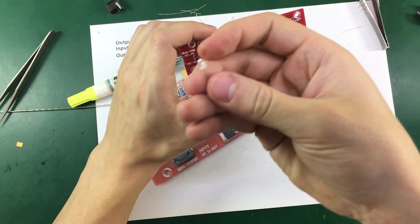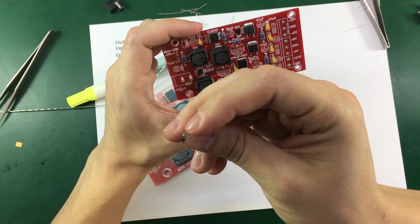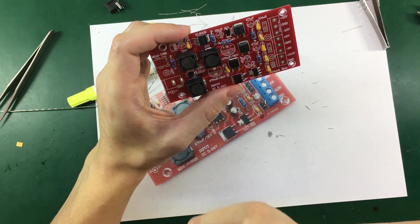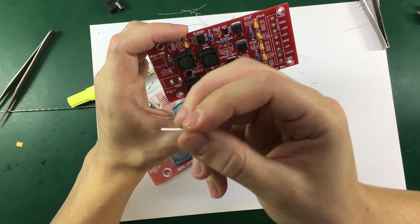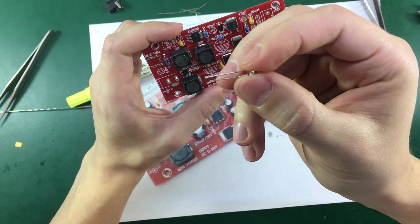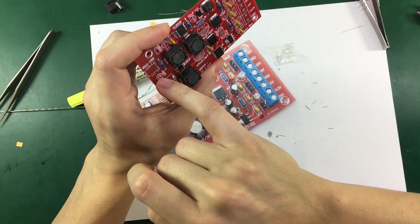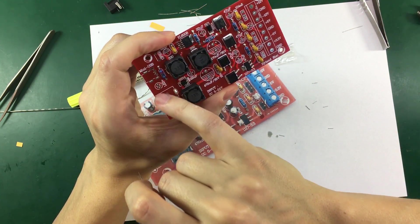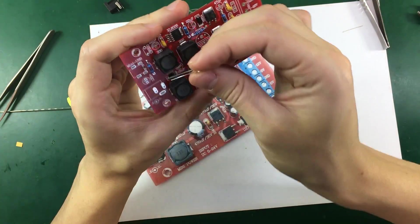Next up I'm going to continue with soldering the LEDs. The LEDs do have a longer positive or anode lead. And you need to align that with the marked silkscreen on the PCB.